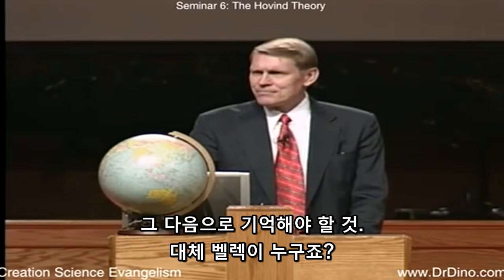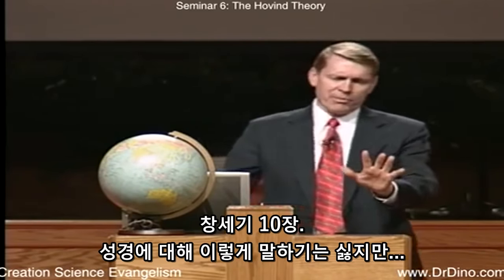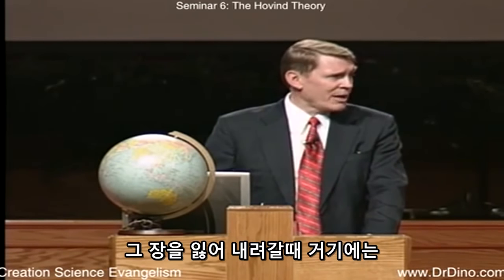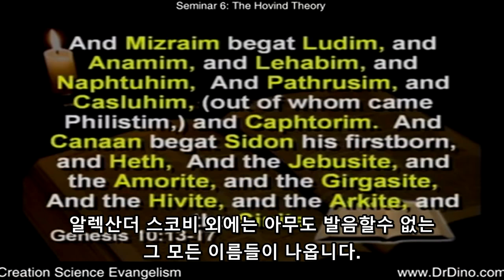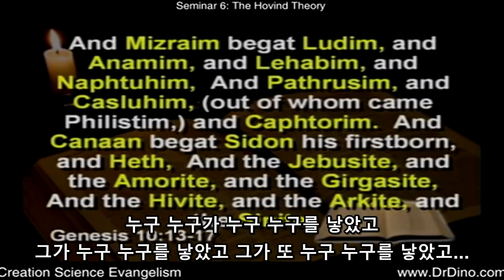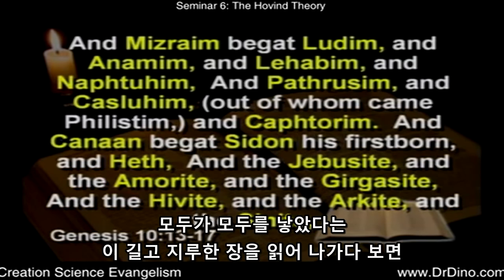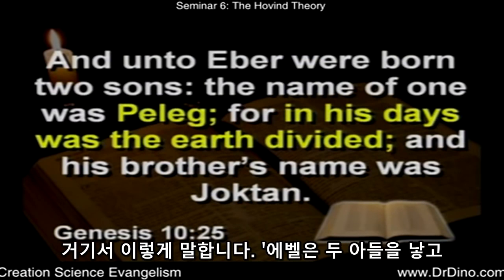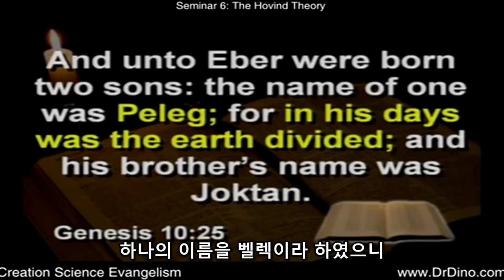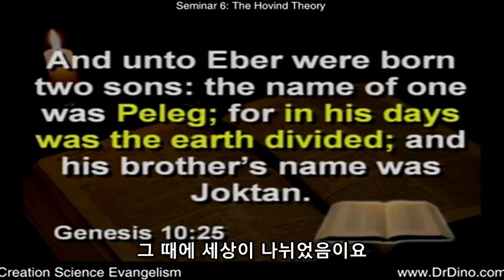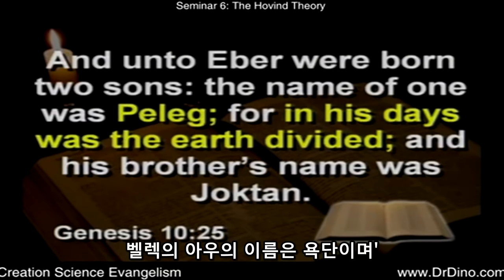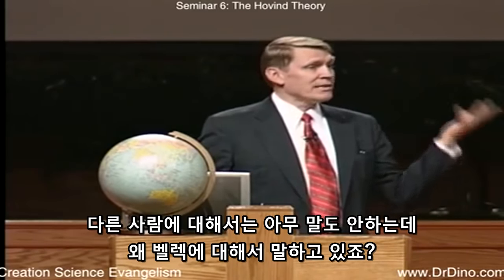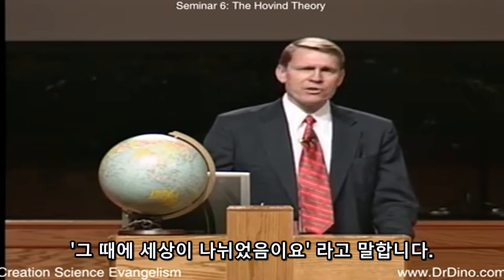Who on earth was Peleg? Genesis chapter 10 is boring — all these big names nobody can pronounce — but all of a sudden you come across verse 25: 'Unto Eber were born two sons. The name of the one was Peleg, for in his days was the earth divided. And his brother's name was Joktan.' Peleg is the only one mentioned with a reason for his name. The word Joktan means 'shorten'; Peleg means 'divided.' Peleg was born about 100 years after the flood, and he only lived to be 239, while his father and grandfather lived into their 400s. What happened in the days of Peleg?